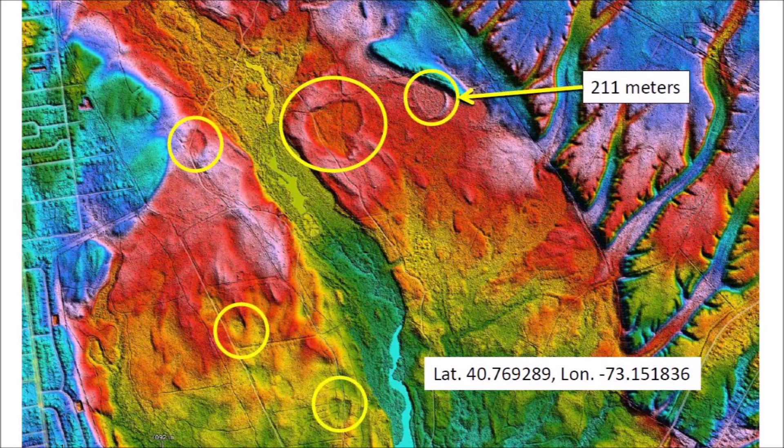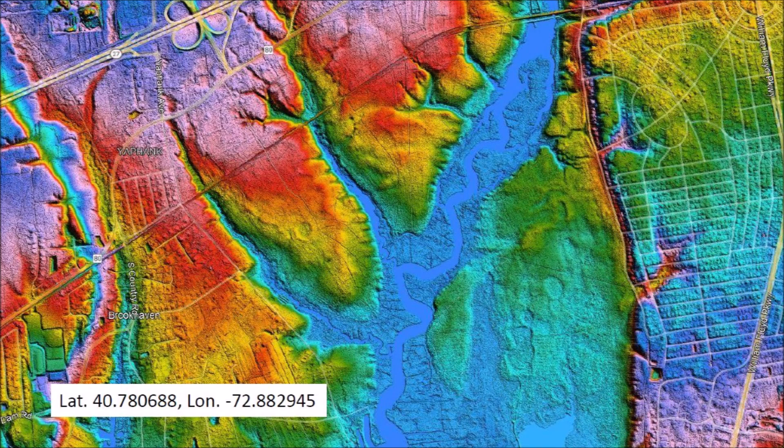The Carolina Bays that still remain in Long Island are in terrain that is not suitable for construction. Careful inspection reveals regular structures with raised rims, some of which measure 211 meters in diameter. Most of the Carolina Bays in Long Island are on sandy soil deposited along channels that carried water from the melting glaciers.